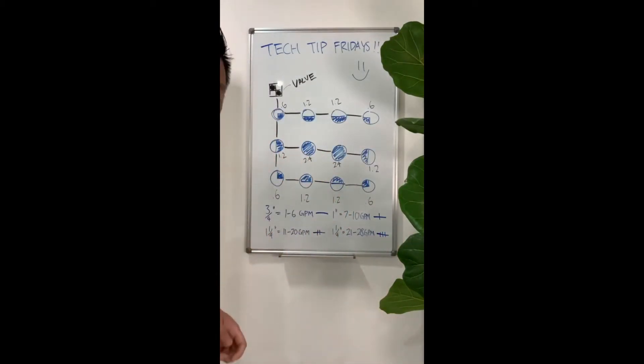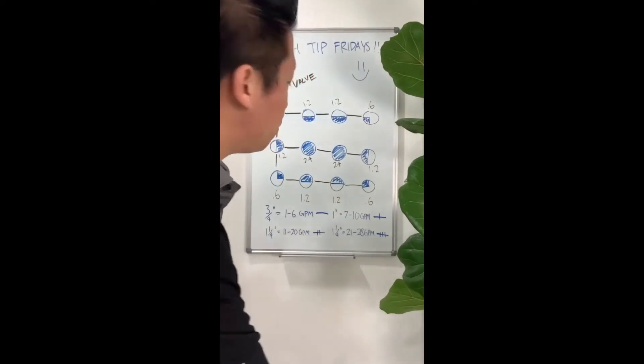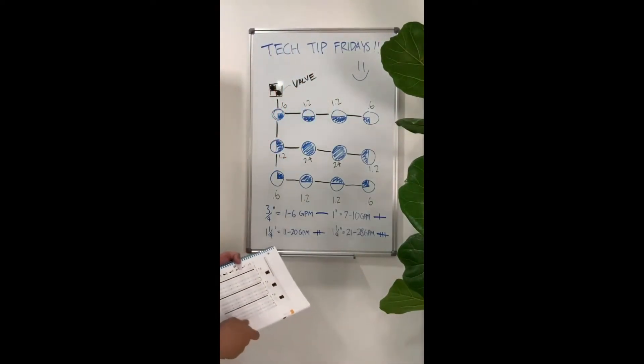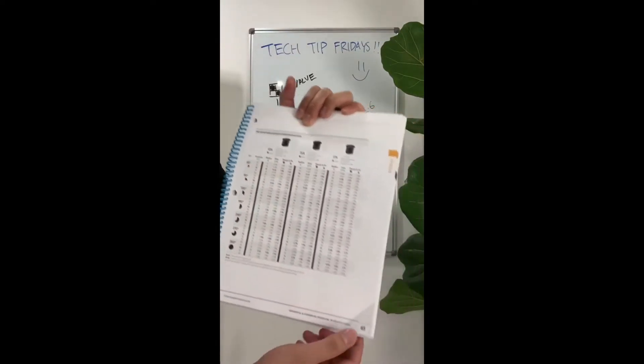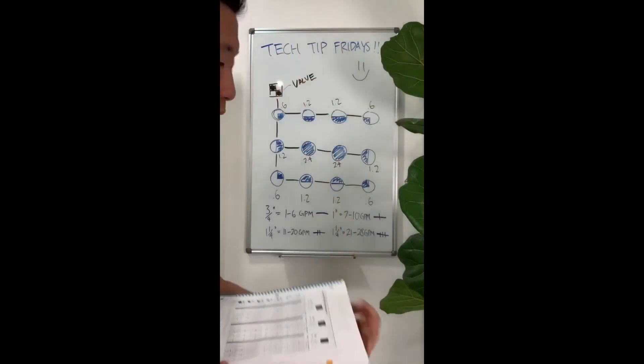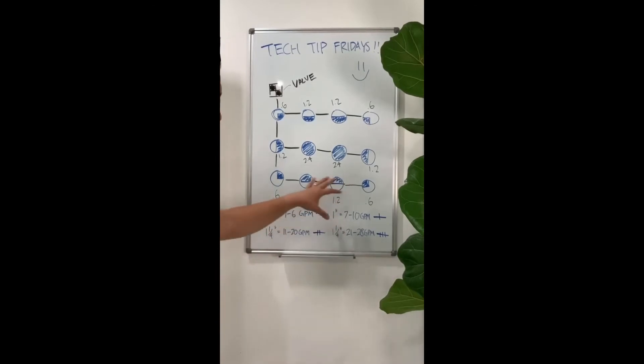Now, the other key piece of information that we're missing here that we'll need to do our pipe sizing properly is how much GPMs is each emitter emitting. So for today's example, we're going to be using the adjustable 12-foot nozzle on page 65. And I kind of marked it down here for easy reference as we're calculating for the pipe sizes.